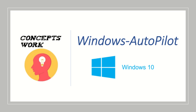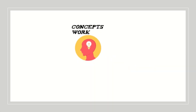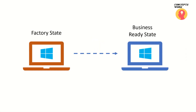Welcome back to our channel. In this video we are going to talk about Windows Autopilot, a feature available with Windows 10 that can help you transition a factory state device to a business ready state device by following a process termed as zero touch deployment. Zero touch deployment is not new — we have been doing this with Configuration Manager combined with MDT.